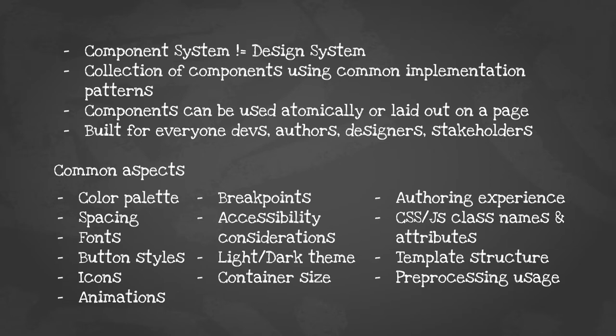The componentry built in a component system should have a common implementation pattern — they should all feel familiar, like they're built by one person. They can be used atomically, embedded in other components, laid out on a page next to each other. Importantly, you need to build the component system for everyone: devs, authors, designers, and stakeholders. Anybody that needs to understand what's possible needs to be addressed in how you build it, how you document it, and how you present it to the business.